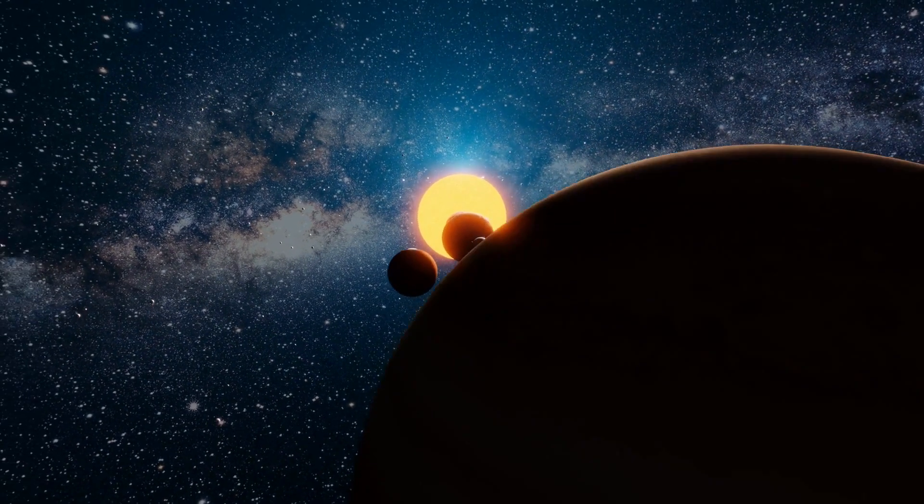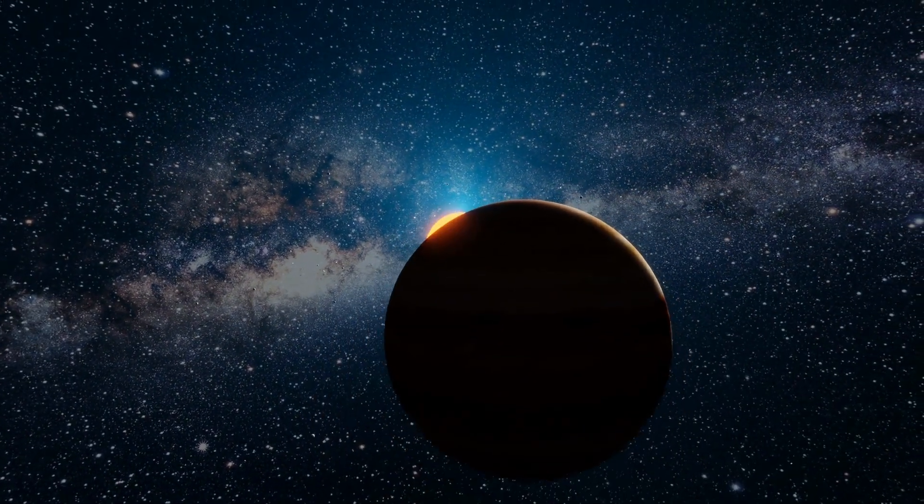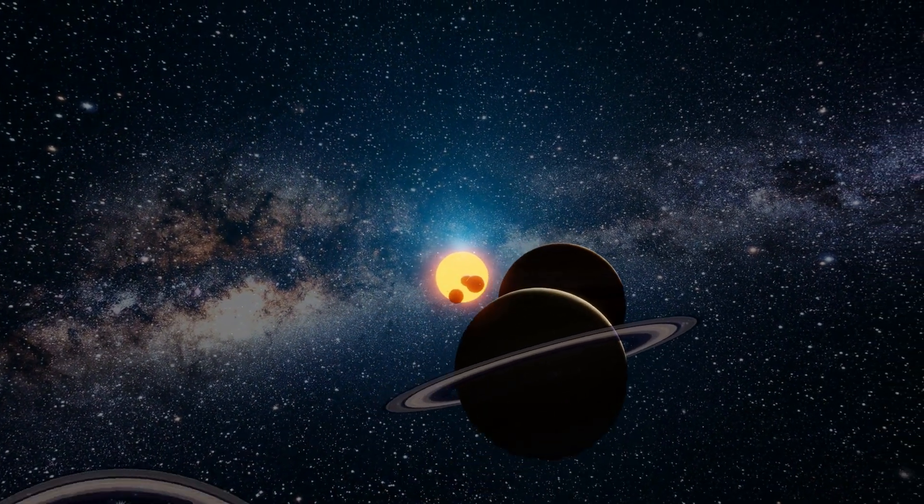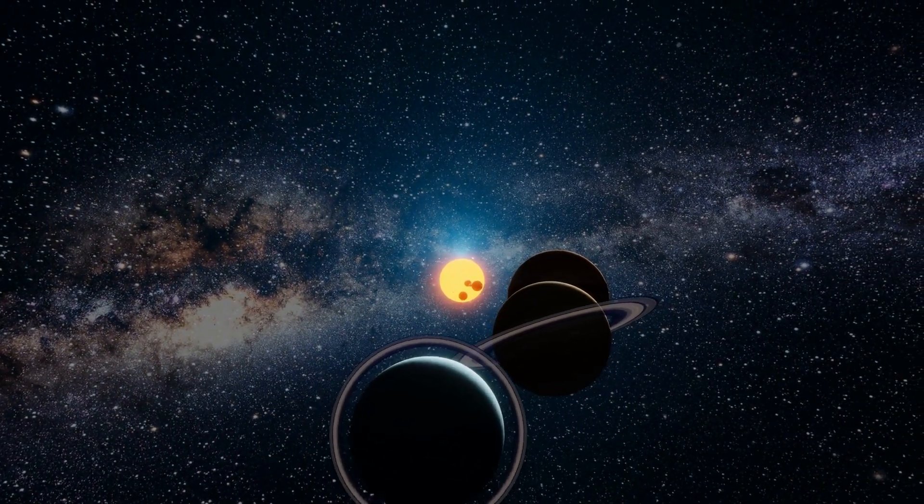It extends from about 30 to 50 astronomical units from the Sun and is named after the Dutch-American astronomer Gerard Kuiper, who first predicted its existence in the 1950s.